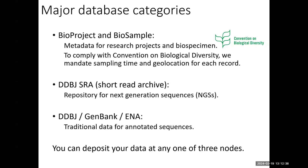The third category is what we call the traditional repository or traditional data. At DDBJ the database itself is named DDBJ, at NCBI it is called GenBank, and at EMBL-EBI it is called ENA. These repositories receive annotated sequences. Annotation indicates, for example, where the exons and introns are, or what kind of amino acid sequences are translated. Such details are described and registered at one of these repositories.